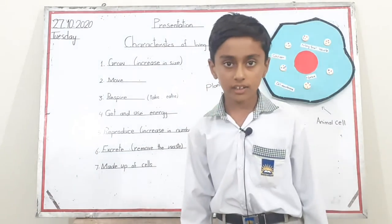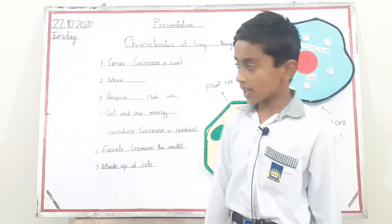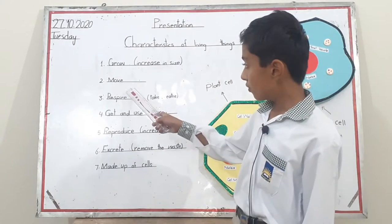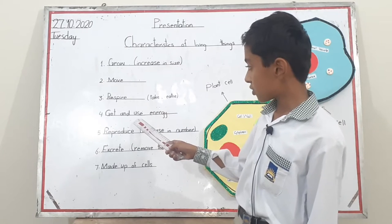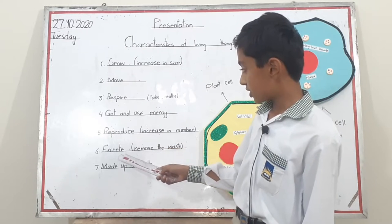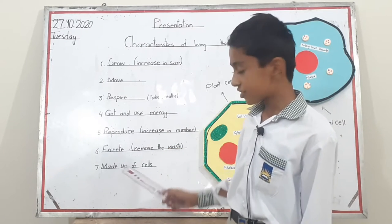There are many characteristics of living things. For example: grow, move, respire, get and use energy, reproduce, excrete, and made up of cells.